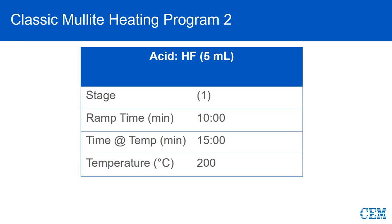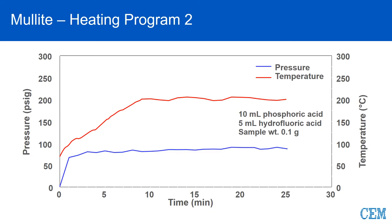We then cool it below 80°C, open the vessel, and carefully add HF dropwise. We seal the vessel back up and put it back in the microwave for a 10-minute ramp and a 15-minute hold. The I-Prep vessel requires a 25-minute ramp for safety. The pressure is a little higher this time due to the vapor pressure of HF, but not much. The result is a completely clear dissolution — compared to the original opaque material.